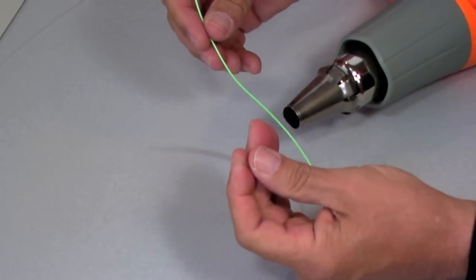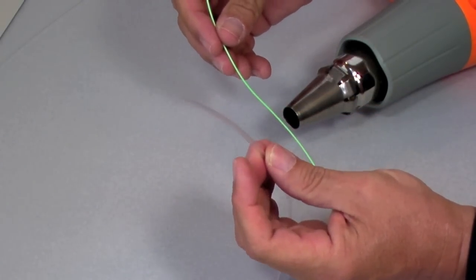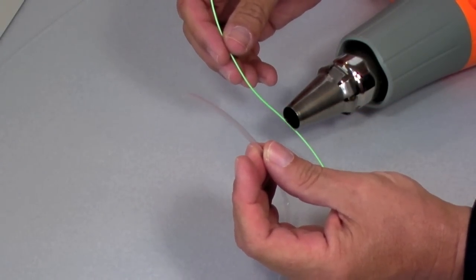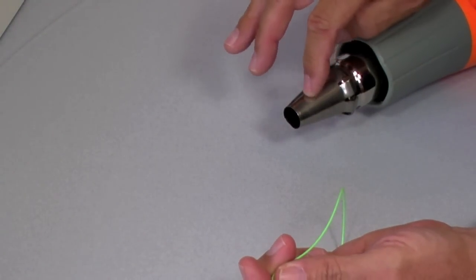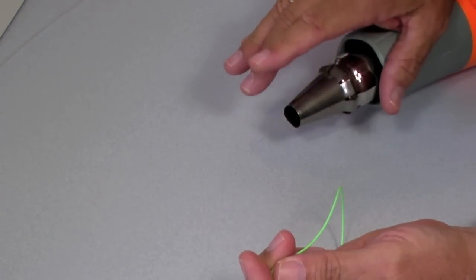We're going to do this using some heat shrink, in this case polyolefin 2 to 1, and this is one-eighth inch diameter. And we have our heat gun here with the nozzle.